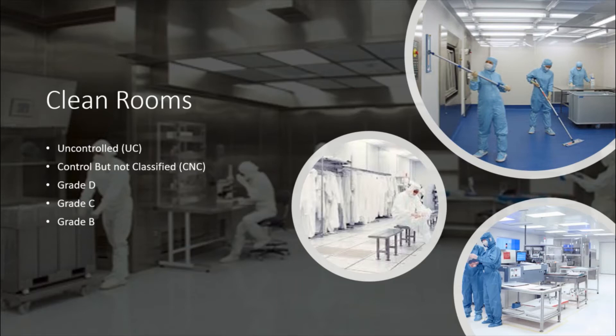For better understanding, the concept of a cleanroom is just like an onion. As you peel off the onion and go to the inner core, it will be cleaner. That's how the cleanroom has been designed — the core part is the most clean, and as you move from the outer layer to the inside, it becomes progressively cleaner.